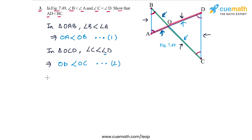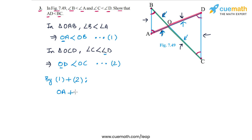Now because both inequalities hold, we can add Inequality 1 and Inequality 2. The sum of the left sides must be less than the sum of the right sides, so OA plus OD must be less than OB plus OC.